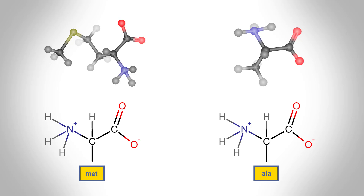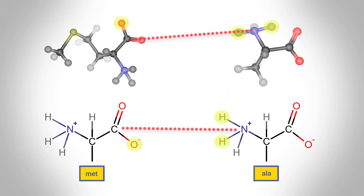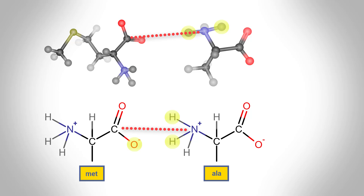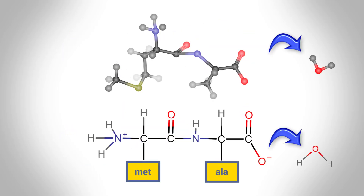Peptide bond formation is a type of condensation reaction. During the reaction, the highlighted atoms are removed. The carbon atom in the carboxyl group of the methionine becomes linked to the nitrogen atom in the amino group of alanine, and a peptide bond forms between methionine and alanine.